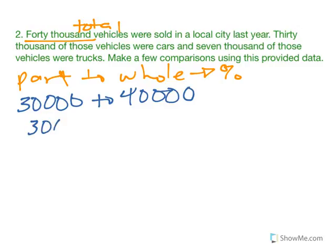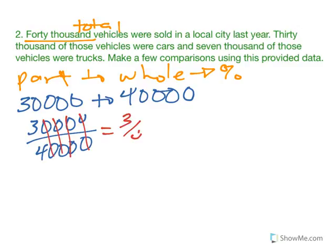If I write that as a fraction, fractions are the easiest to work with because it's easier to see that you can reduce. These zeros chop out and we're left with three-fourths. Three-fourths is 75%. That means 75% of all vehicles were cars.